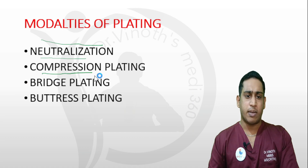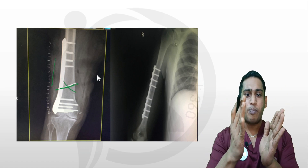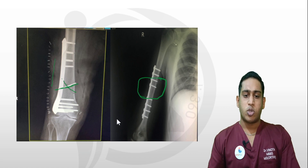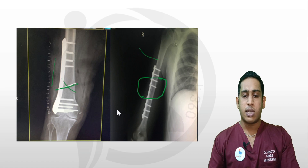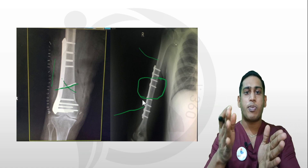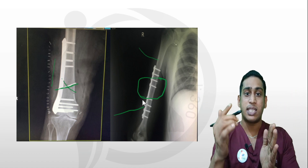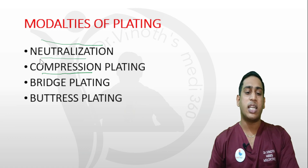The second modality is compression plating, where we compress the fracture site together. For example, in a shaft of humerus fracture, muscles are attached to both the proximal and distal fragments. To counteract the bending force or muscle pull, this plate is applied in such a way that it provides compression, binding the fracture fragments against the distracting or bending force of the muscles. This is called compression plating.